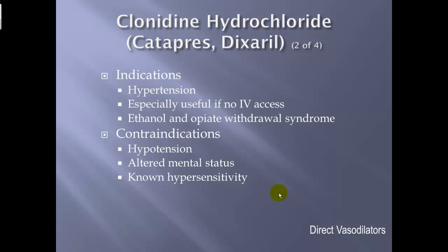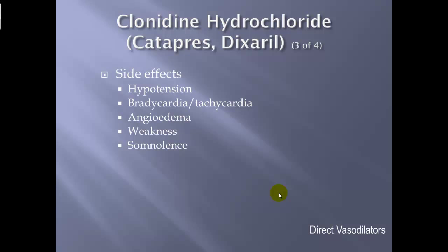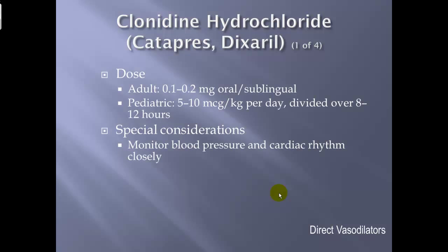Contraindications: hypotension, altered mental status, and known hypersensitivity. Side effects: hypotension, bradycardia, tachycardia, angioedema, weakness, and somnolence (a near-sleep state). Dose: 0.1 to 0.2 mg oral or sublingual. Pediatric: 5 to 10 mcg/kg/day, divided over 8 to 12 hours. Special considerations: monitor blood pressure and cardiac rhythm very closely.